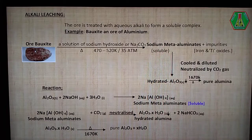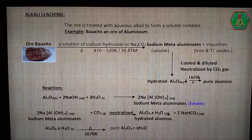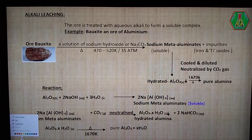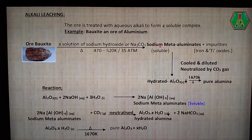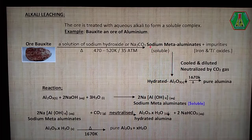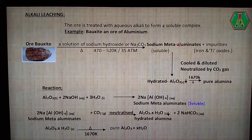The bauxite ore is crushed and ground well. The powdered bauxite ore is mixed with a solution of sodium hydroxide or sodium carbonate. In this mixture, a temperature of about 470 to 520 Kelvin is maintained under 35 atmospheric pressure for several hours. After that, we have two components: the soluble component — sodium meta-aluminate — and the impurities, iron oxide and titanium oxide. Both are present in the container: soluble sodium meta-aluminate and insoluble iron and titanium oxides.